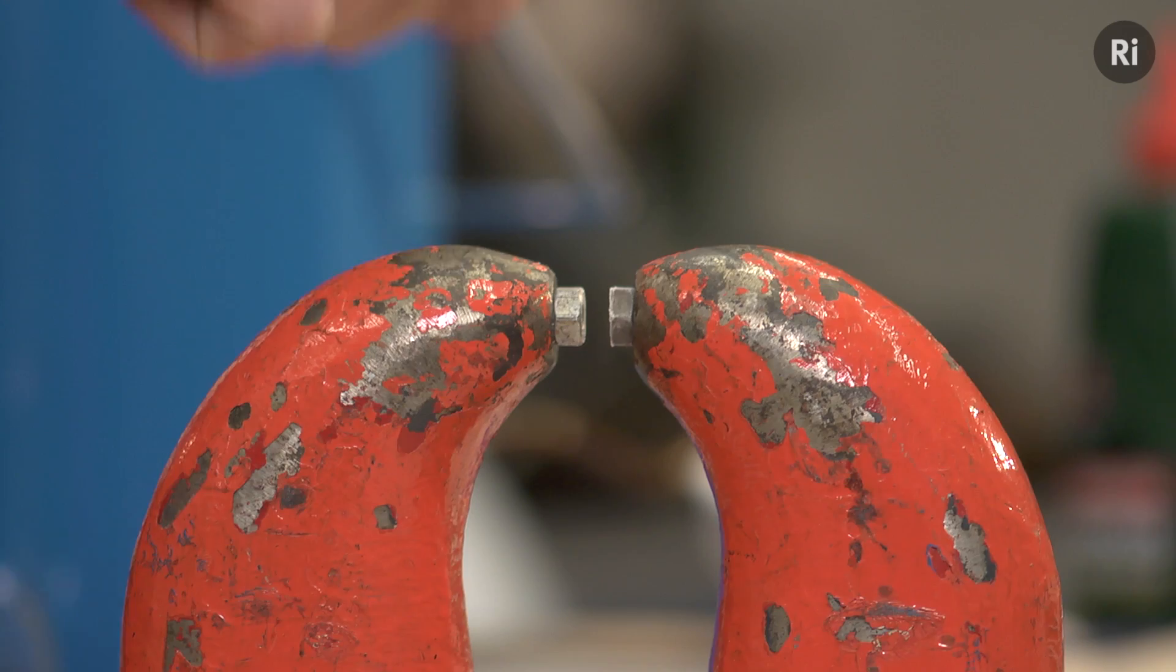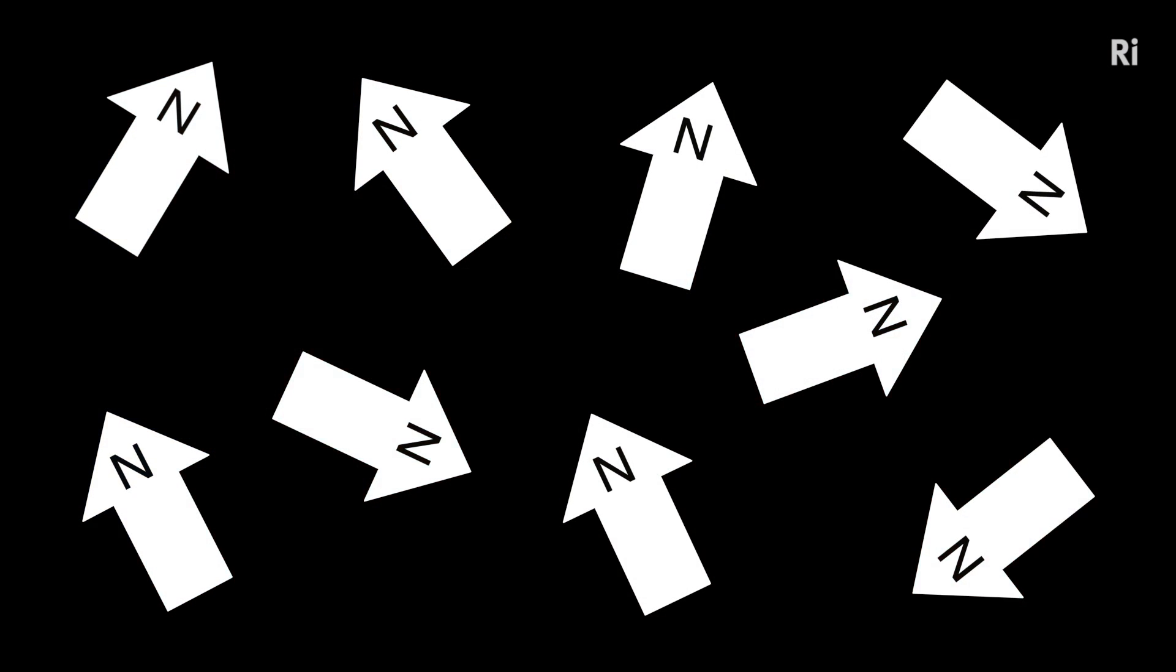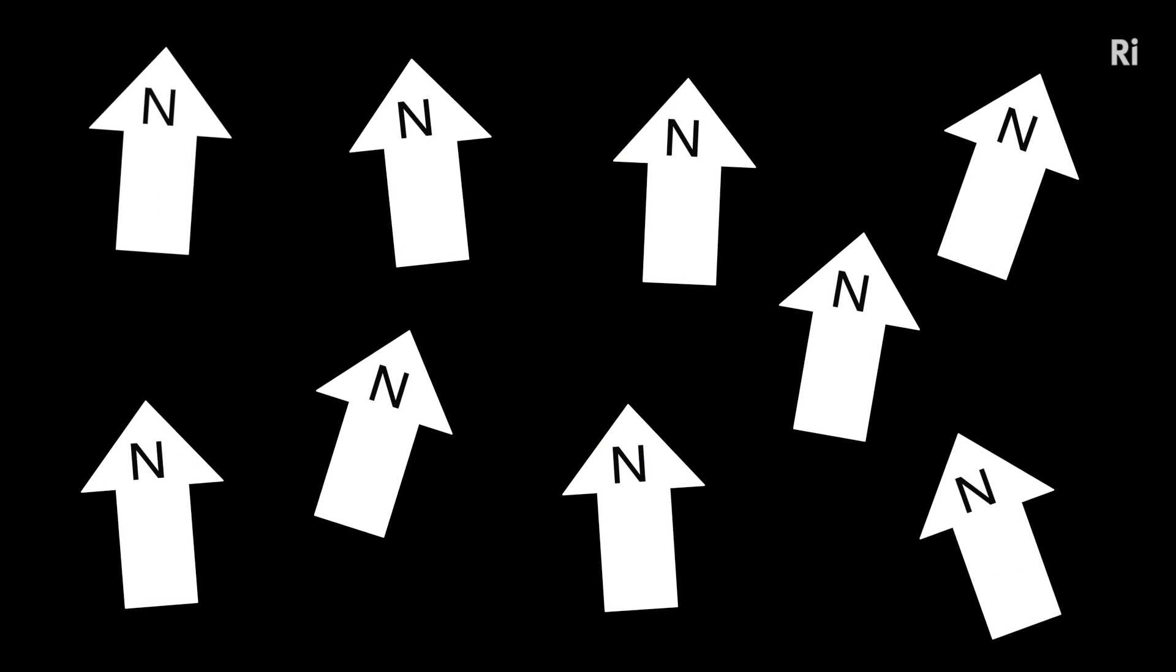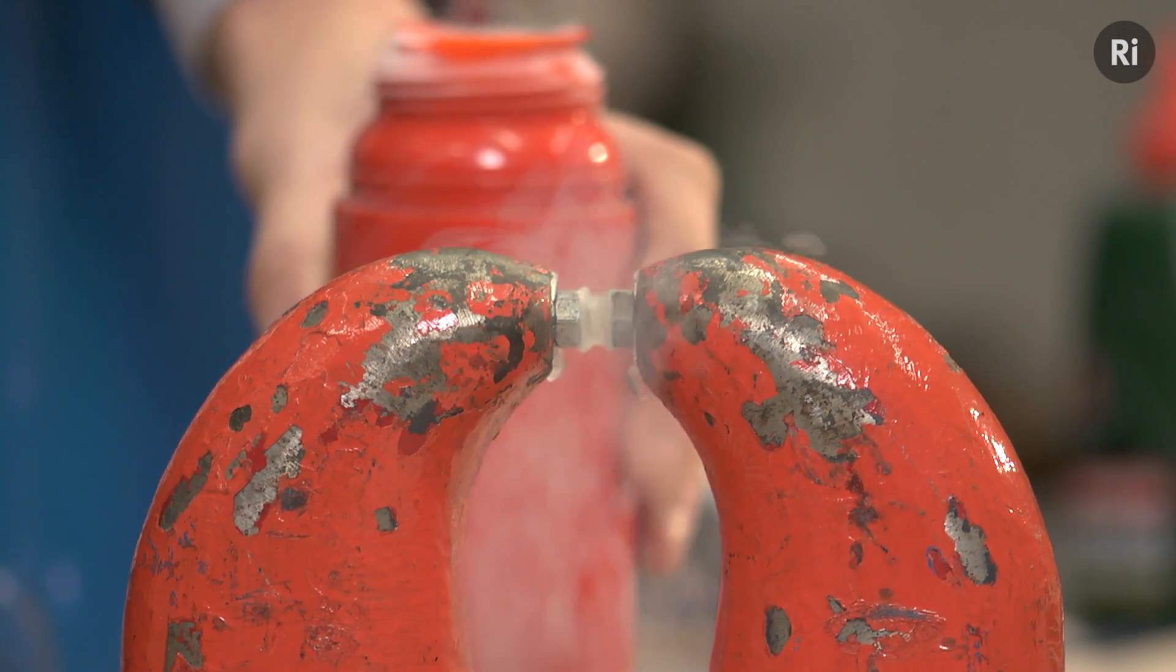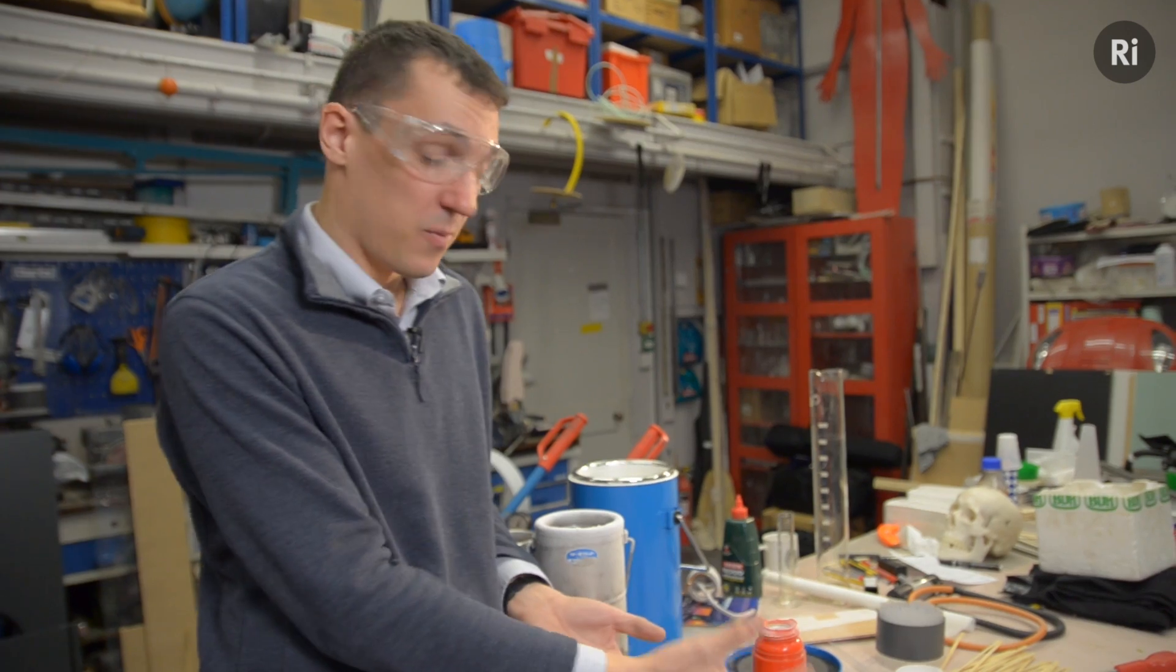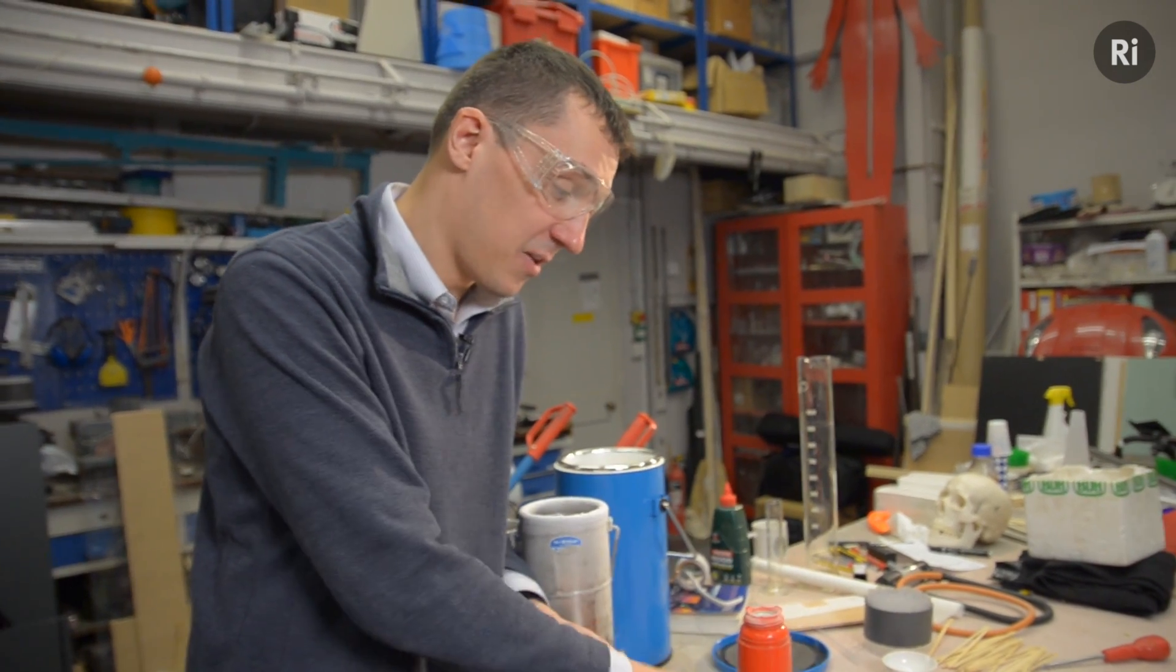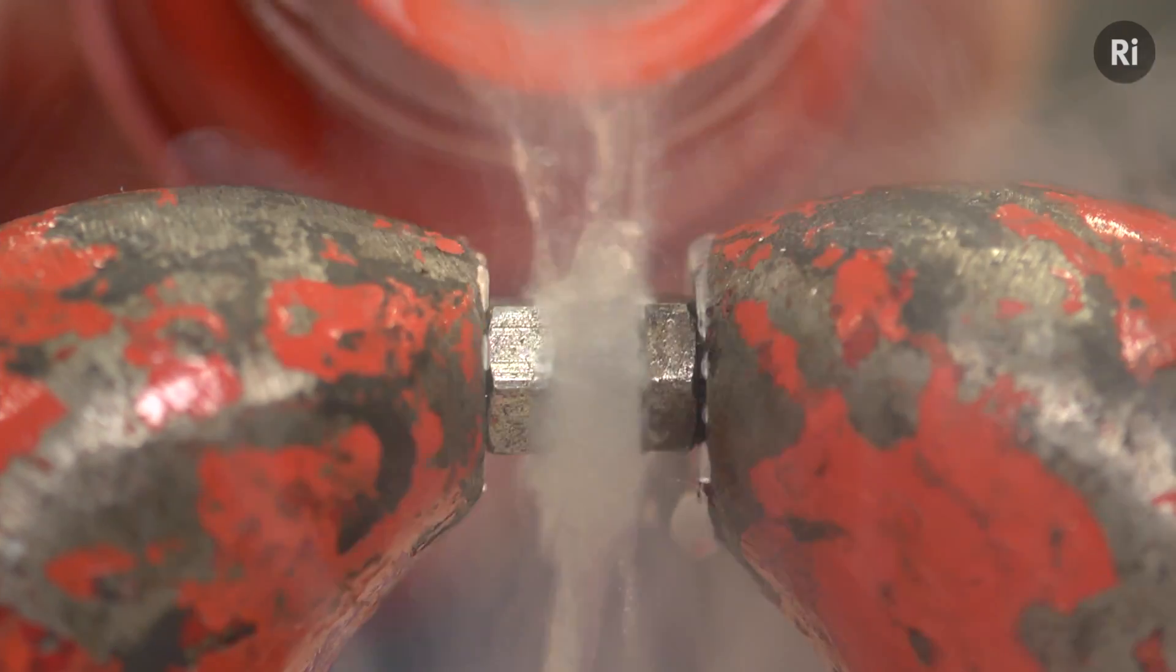But when you introduce the permanent magnet to the oxygen here, then you get those magnetic molecules all slightly aligning, a bit more than they would normally. And that creates a net magnetic field. So the induced magnetic field then interacts with the magnetic field from the magnet, and you get the oxygen sticking in the poles.